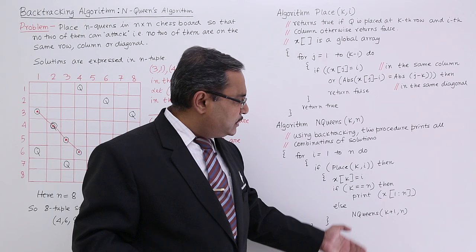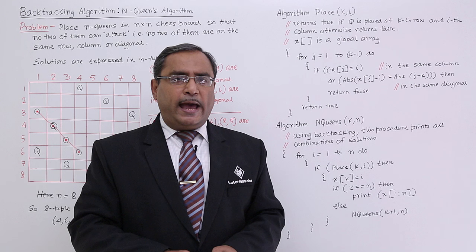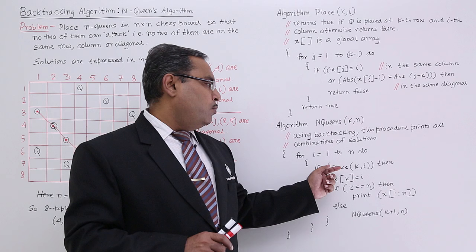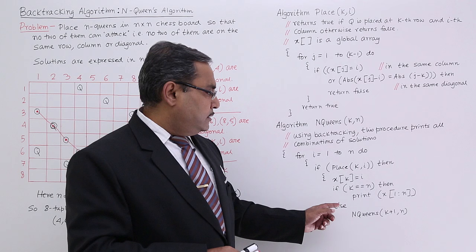So this is the N-Queens problem algorithm. If this question comes, you should write both functions because one function is called from another. Here the backtracking is the recursion within iteration. I have explained in multiple videos this backtracking algorithm using the N-Queens problem. Thanks for watching.